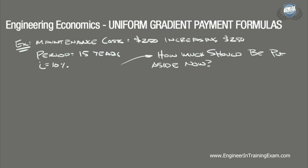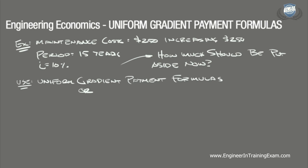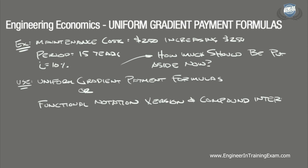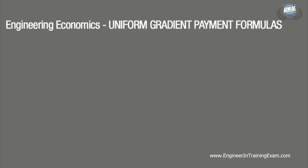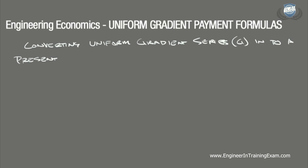The goal is to determine how much money the company should put aside today to cover 15 years of increasing maintenance costs. This can be determined in one of two ways. In this video we will solve using the uniform gradient series formula written in functional notation and the compound interest tables. We are converting the uniform gradient series, represented by G, into a present value P. Knowing that we are looking for P given G is important when referencing the compound interest tables.